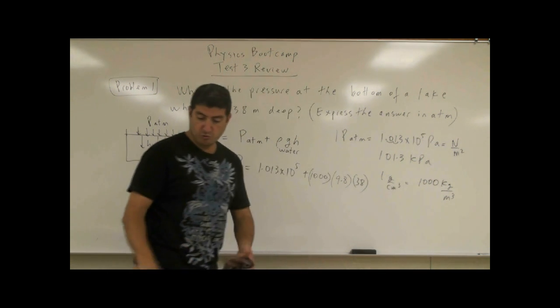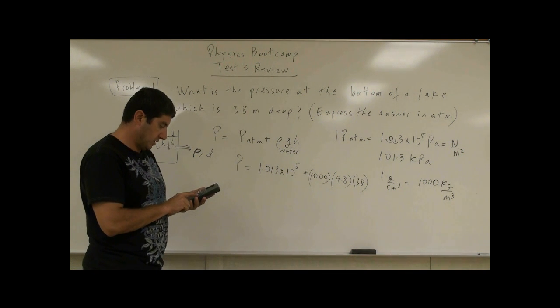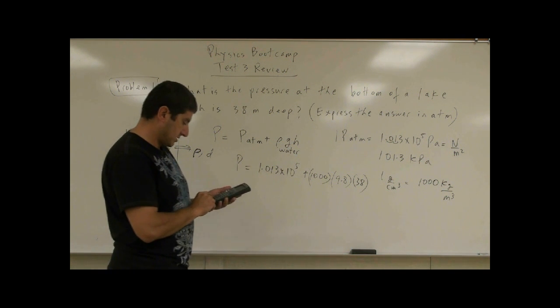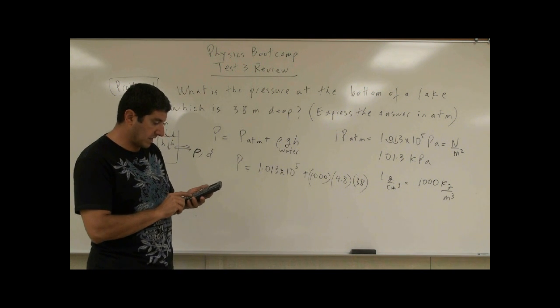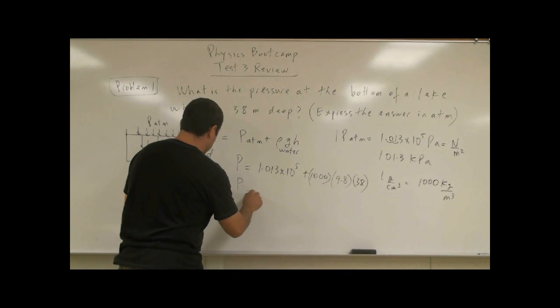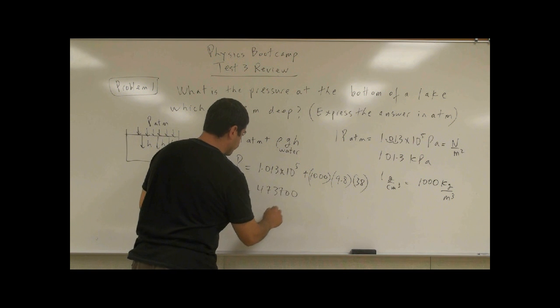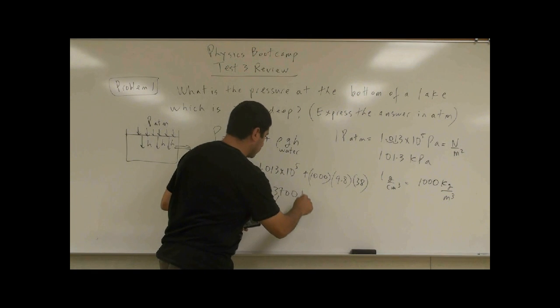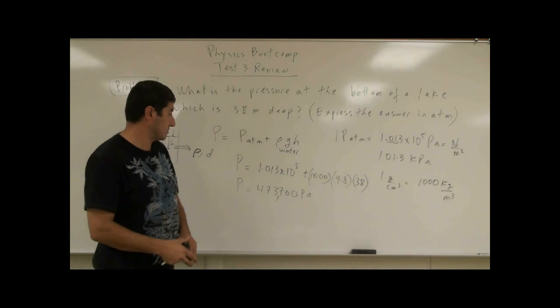Now we could multiply all of this. 1.013 times 10 to the power of 5 plus 1,000 times 9.8 times 38. And we get the pressure is 473,700 pascals. That's the pressure when you go 38 meters down in water.